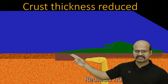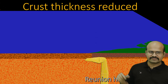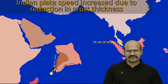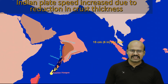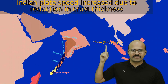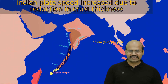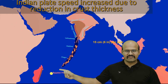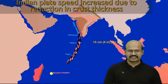We can see that the thickness of the Indian plate was reduced after passing over the magma from this hotspot. Since the thickness was reduced, the weight of the Indian plate was also reduced. So after passing over the Reunion hotspot, our Indian plate started to move with a very high velocity — about 15 centimeters per year. Because of this, the collision was very forceful and it gave rise to the Himalayan mountains.